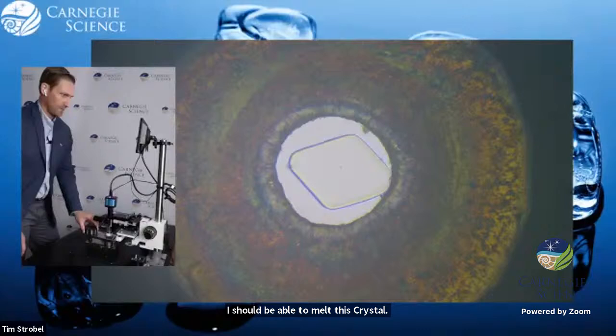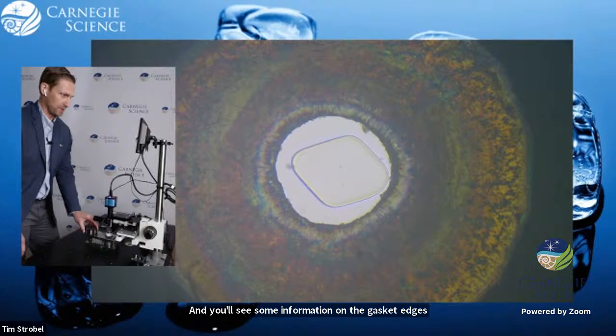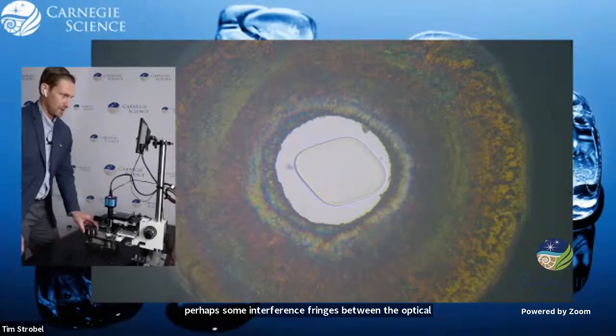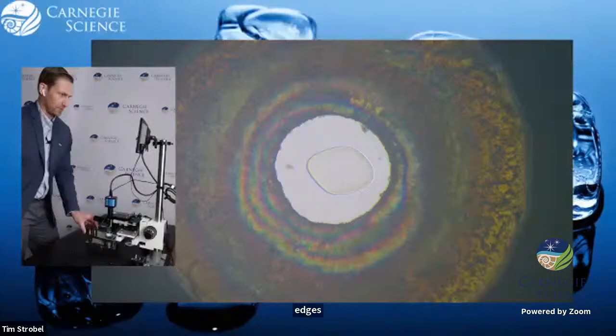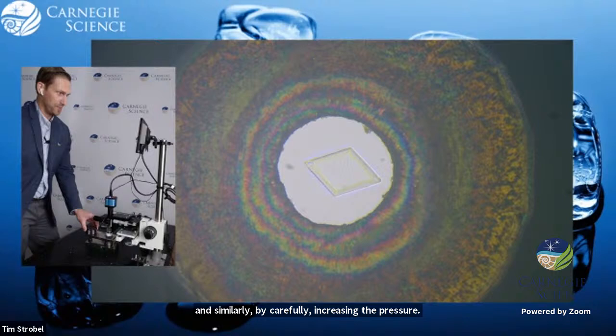And carefully, if I decrease the pressure by turning this knob, I should be able to melt this crystal into liquid water. You'll see some deformation on the gasket edges. And similarly, by carefully increasing the pressure, I can grow a beautiful crystal of ice with lovely facets.